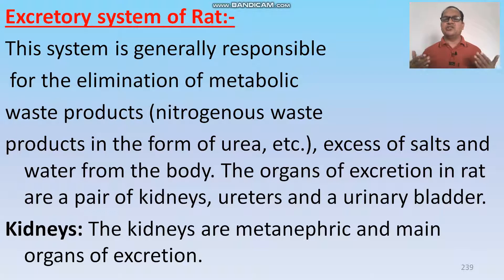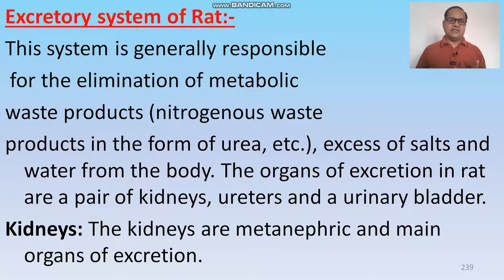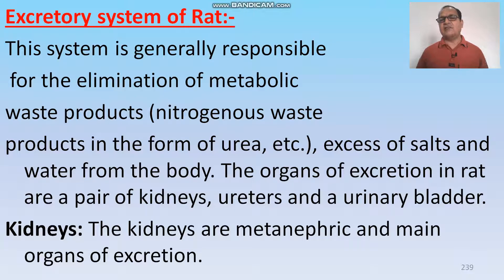The excretory system is generally responsible for the elimination of metabolic waste products like nitrogen waste products in the form of urea, excess of salt, and excess of water from the body. The organs of excretion in rat are a pair of kidneys, ureter, and a single urinary bladder.